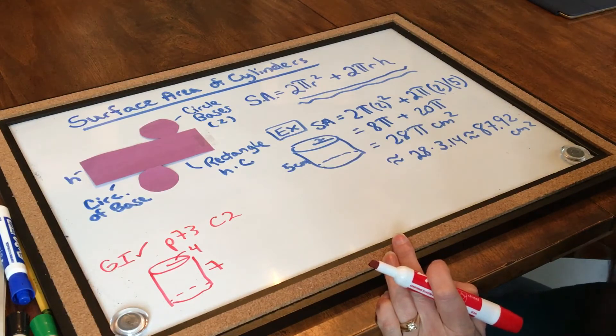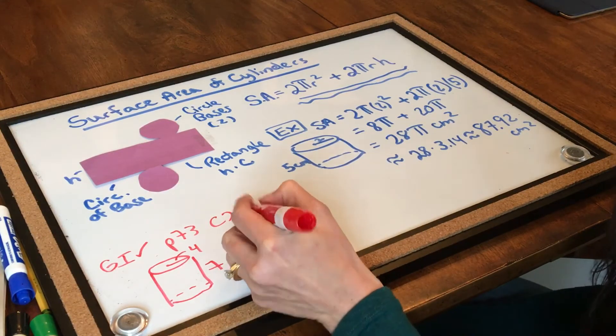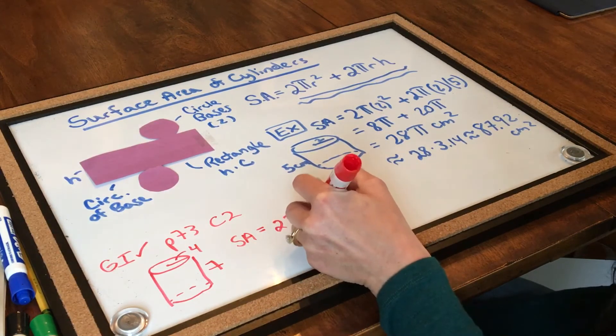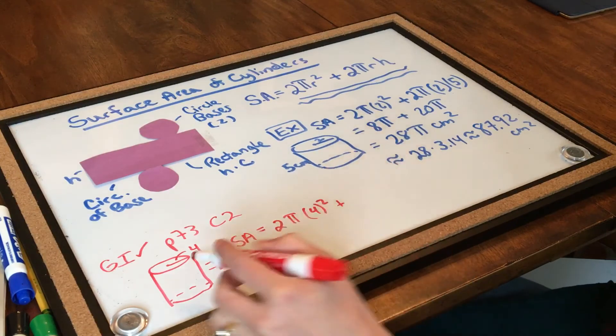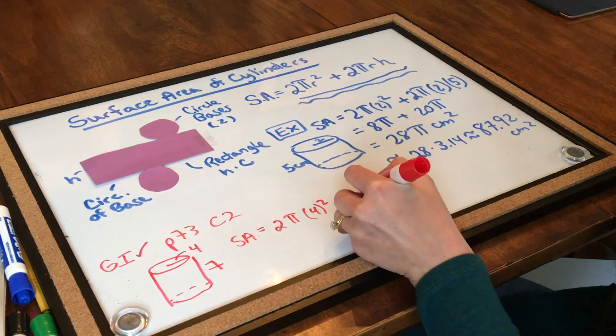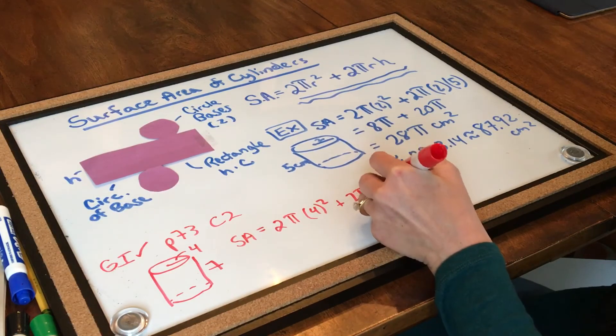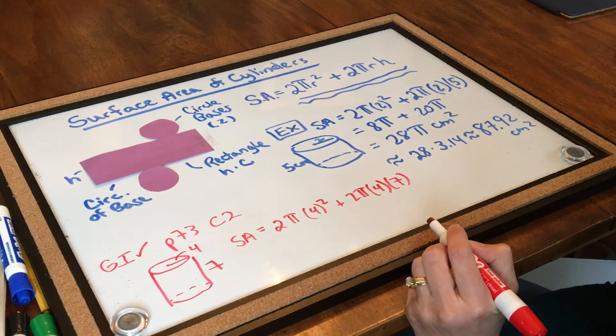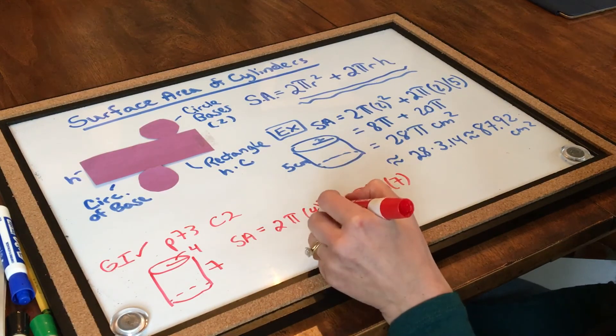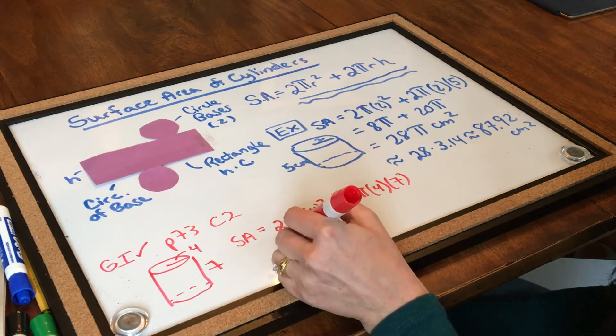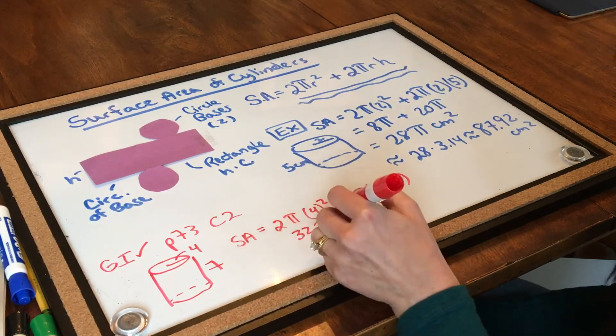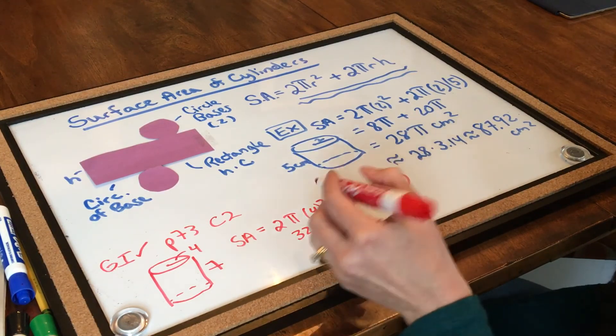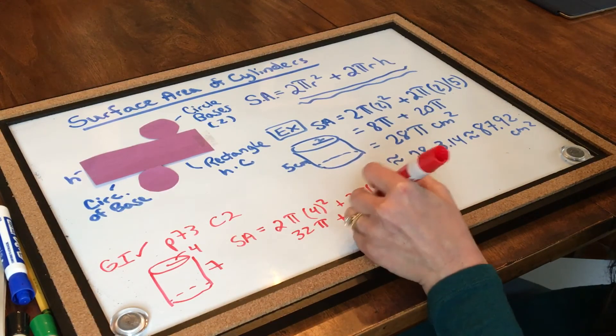All right, let's try this one out. So for my surface area formula, I'm going to use 2 pi times the radius squared, so that's 4 squared. Then I have to add the rectangular part in the center, so that would be 2 times pi times a radius of 4 times 7. Let's put this all together and see what it turns out to be. 4 squared is 16, 16 times 2 is 32, so that gives me 32 pi. And then 4 times 7 is 28, 28 times 2, that would be 56. So this is 56 pi.